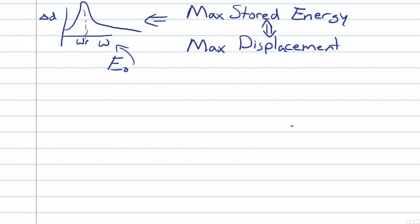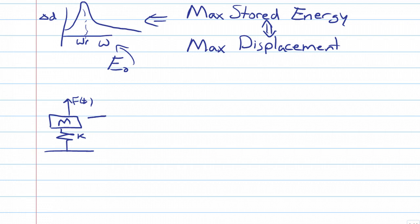I'll take an example from the mass-spring-damper. We have a mass, a spring K, and a force applied on the mass that varies sinusoidally with time. We're measuring the displacement delta D from the rest position. Let's say we're applying a low frequency excitation — low omega.